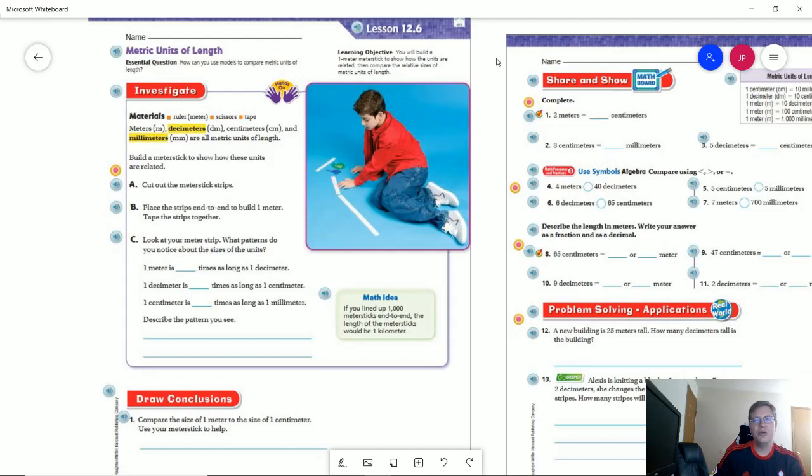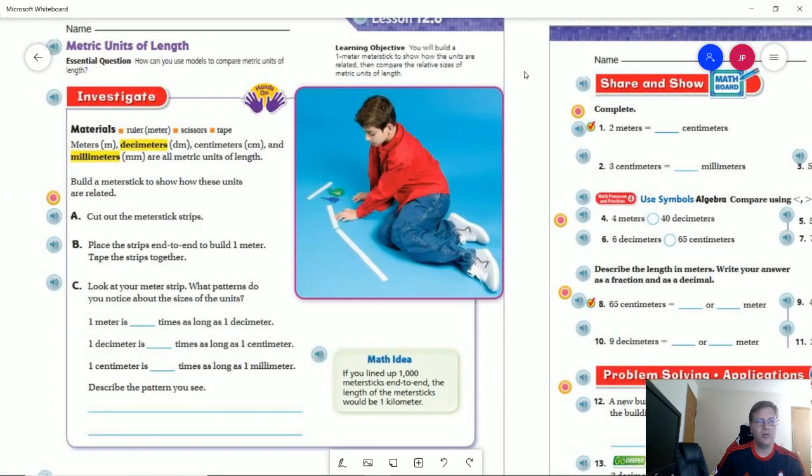When we are working with the metric system, we are working with what I will relate to you next year as being powers of 10. So everything is 10 times greater than the next thing. Meters are 10 times greater than decimeters. Decimeters are 10 times greater than centimeters. Centimeters are 10 times greater than millimeters.